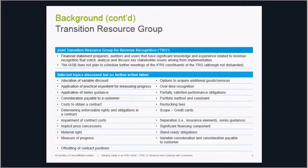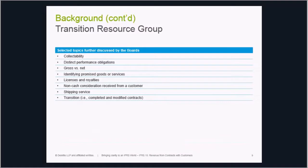Topics where the TRG concluded additional Board discussion was required include: collectability, performance obligations, gross versus net, identifying promised goods or services, licenses, non-cash consideration received from a customer, shipping services, and specific transition considerations — all areas where differing views emerged from TRG discussions on implementation.